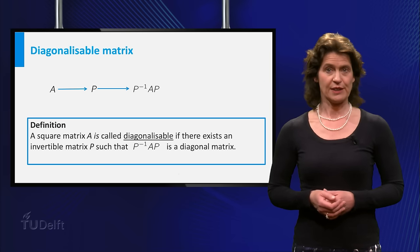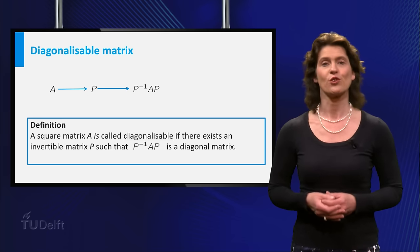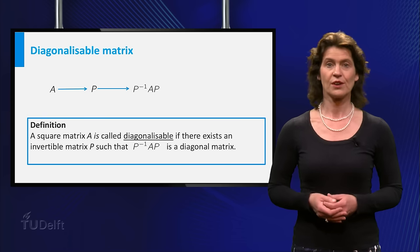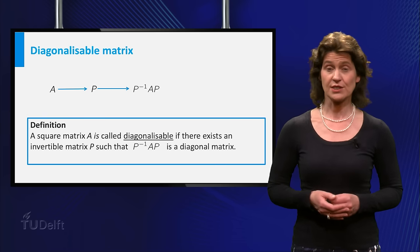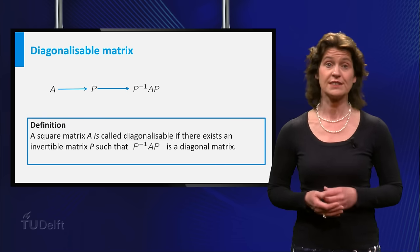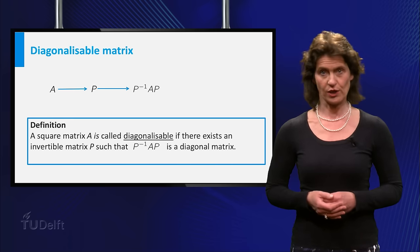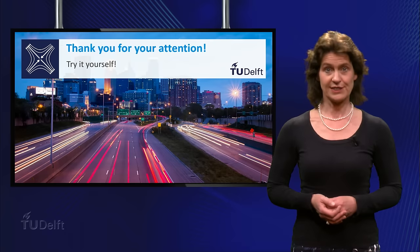A matrix A for which you can find such a matrix P is called diagonalizable. You really have to come to class if you want to find out which matrices are diagonalizable and how you can construct the matrix P. See you there!